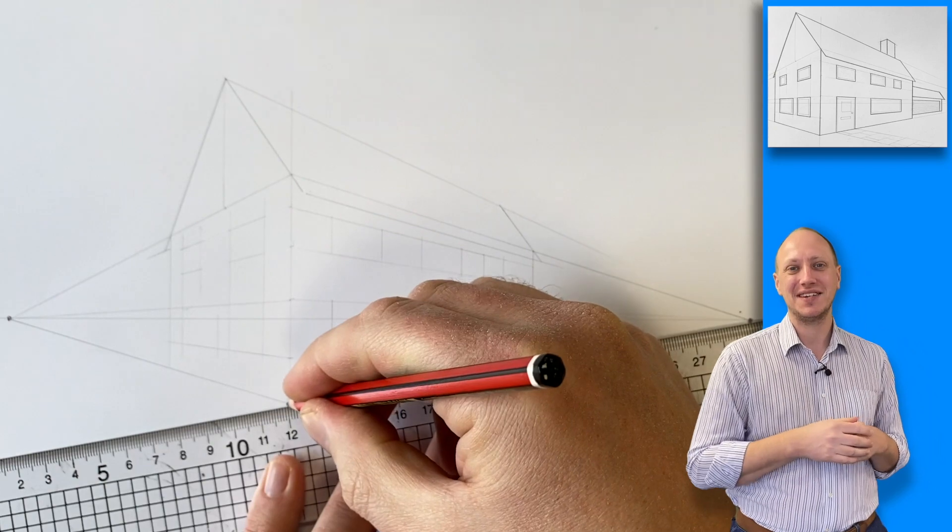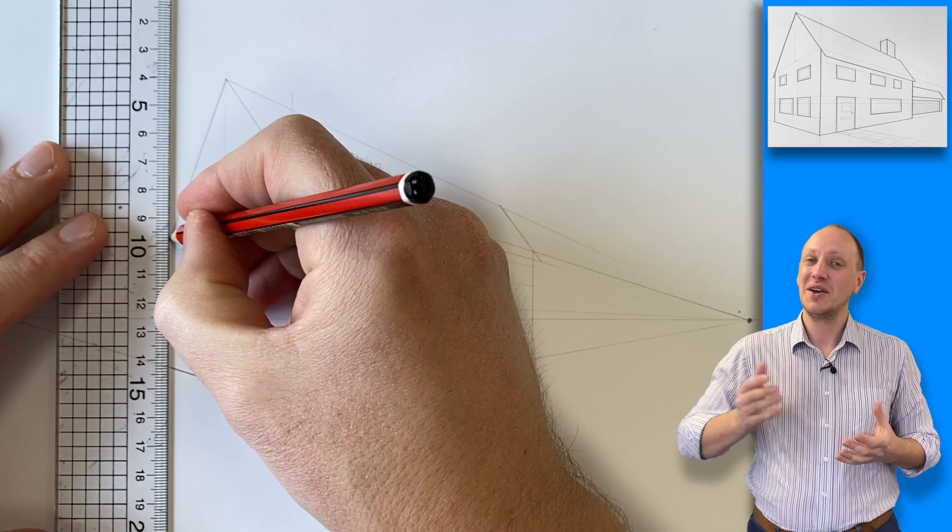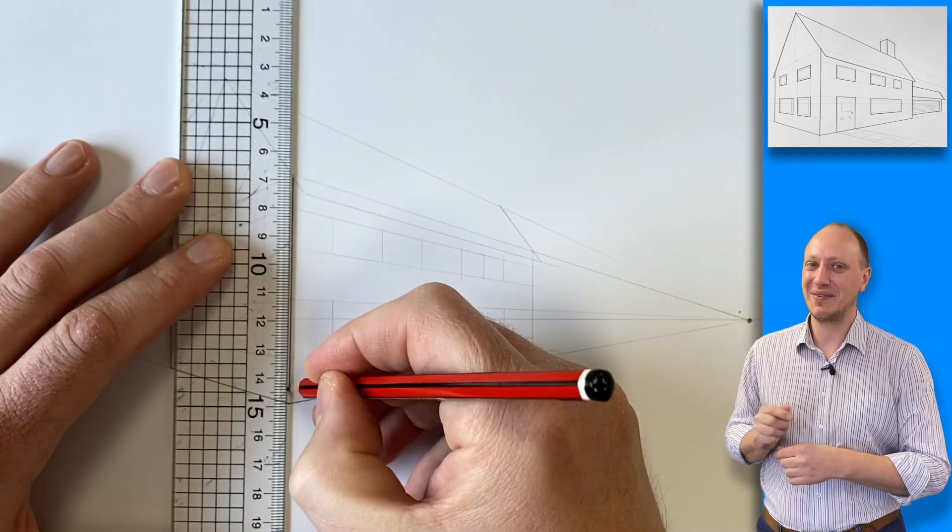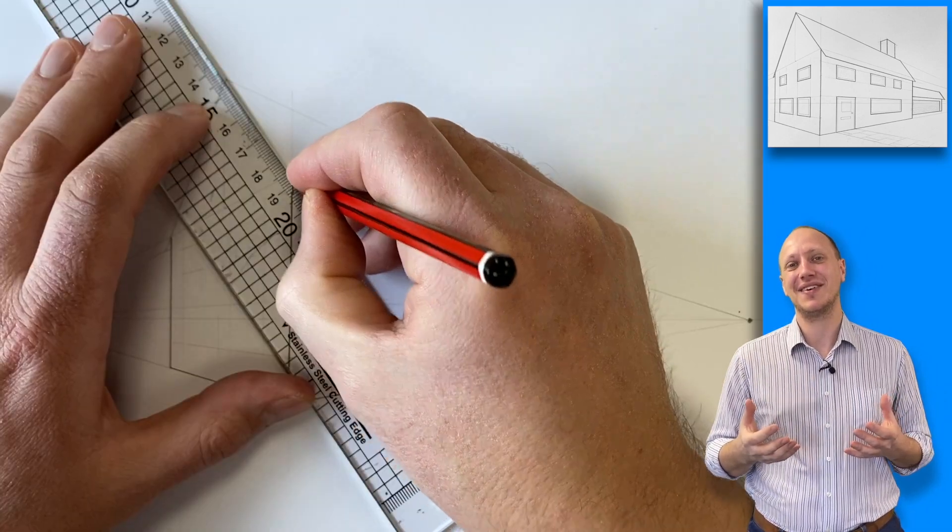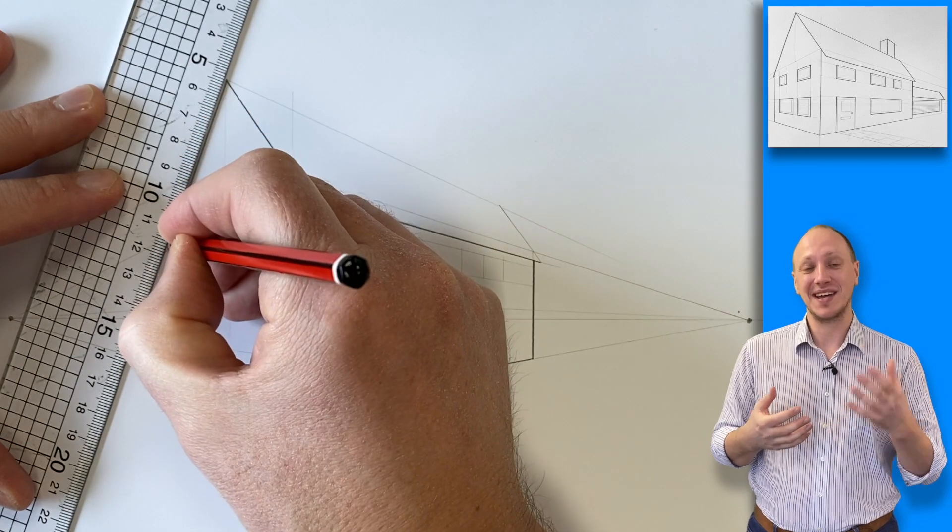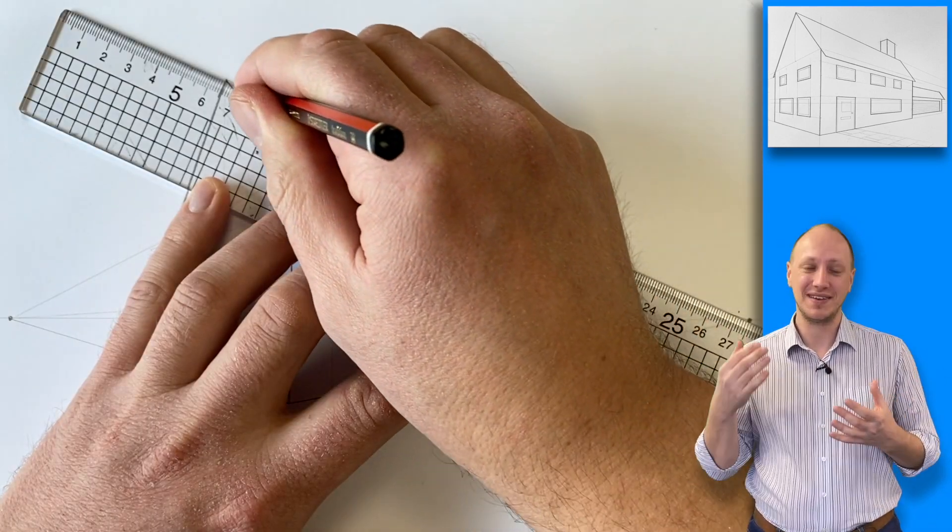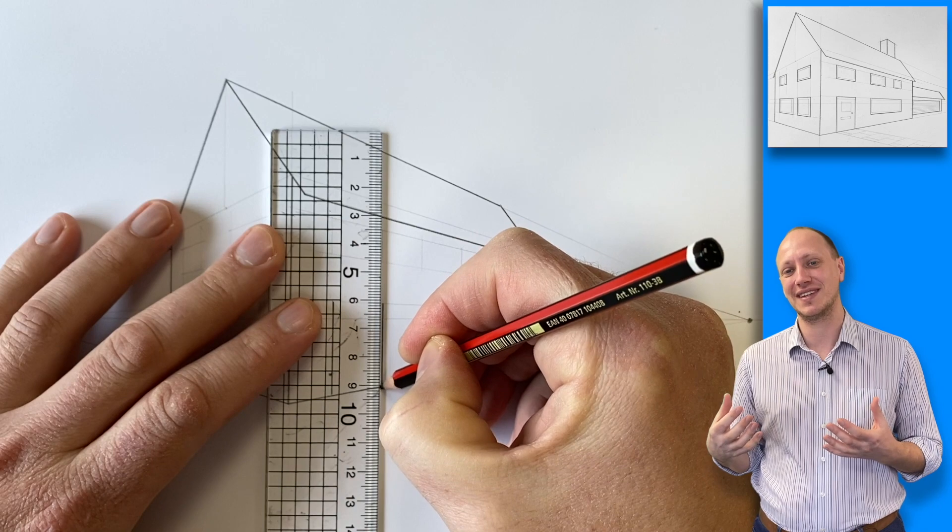Once you're happy with that shape we can go over the edge of the house with bold lines. Remember if you're not happy with it don't go over it. Use these bold lines for the lines that you are completely satisfied with and be accurate at this time. Keep using those vanishing points. Make sure your ruler goes through those points as you draw these lines.